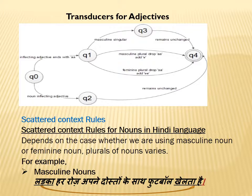Next are the transducers for adjectives. Like we have chota. If we use chota, then the masculine noun drops 'a' — that means chota — and adds 'e' — that means chote. So these are the rules used to convert singular forms to their plural forms.